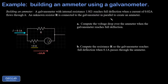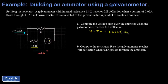For part a, I want the voltage drop over the ammeter when the galvanometer reaches full deflection. This happens when there's 0.02 amps flowing through the galvanometer branch, and the potential difference is given by Ohm's law: v equals ir. My current is 0.02 amps, my internal resistance is 1.8 ohms, and I get a potential difference of 0.036 volts.